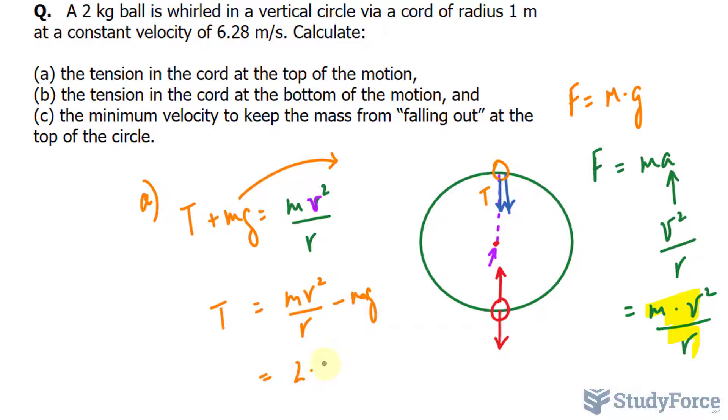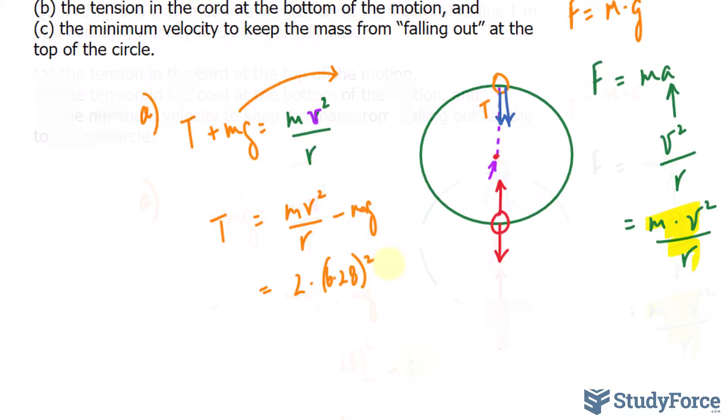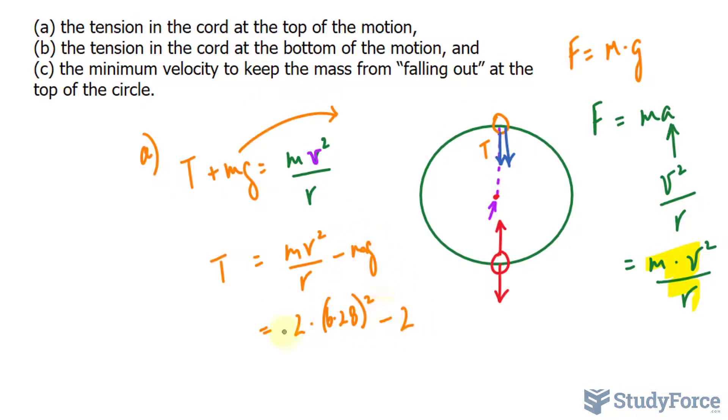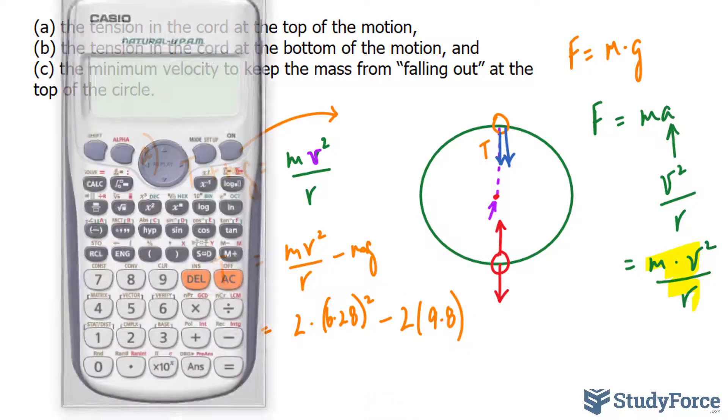2 times 6.28 raised to the power of 2 over 1. Actually, I'll remove the denominator here that is 1, because anything divided by 1 is the number. Minus 2, again the mass is 2, times 9.8.